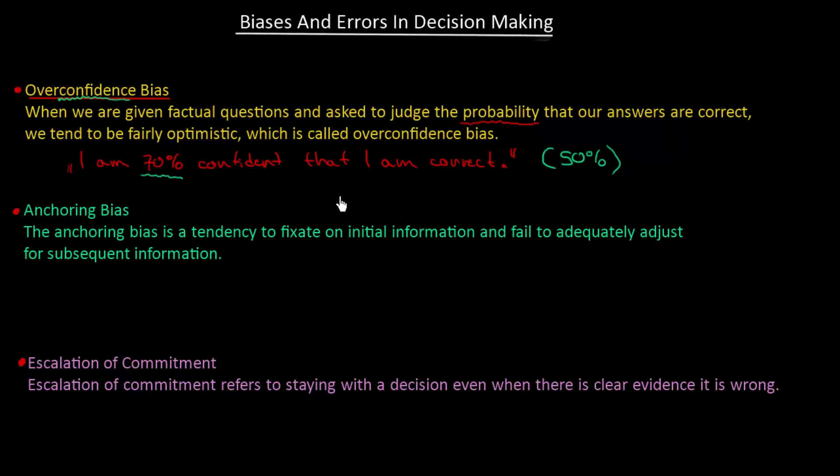This happens with managers. They might be too optimistic or might have too high confidence and do not realize they might be wrong quite often. Secondly, we have the anchoring bias.